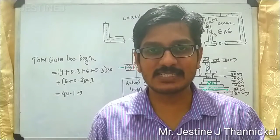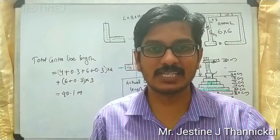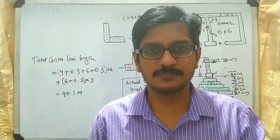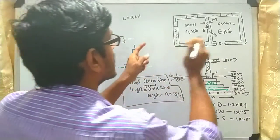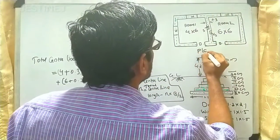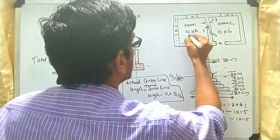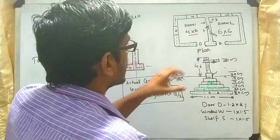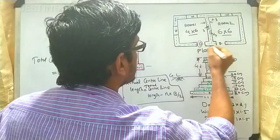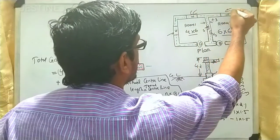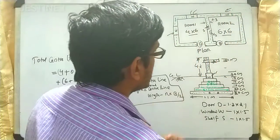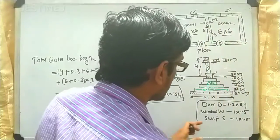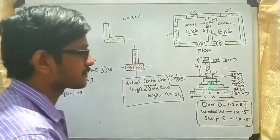Welcome back to a new video lecture. In this lecture we will discuss how to determine a detailed estimate for a building using the centerline method when a plan and a section is given. The plan shows two rooms: Room 1 has internal dimensions 4 by 6, and Room 2 has internal dimensions 6 by 6. There are also door openings, three windows, and dimensions for doors, windows, and a shelf are provided.